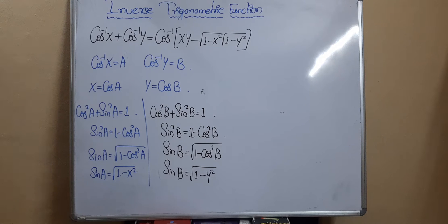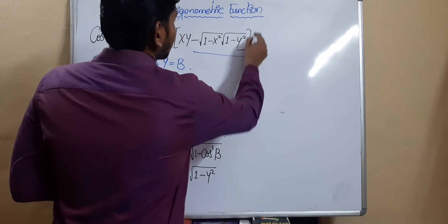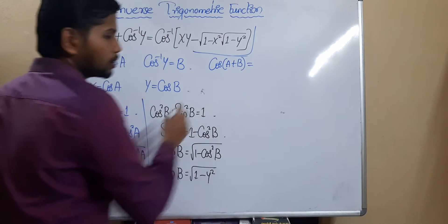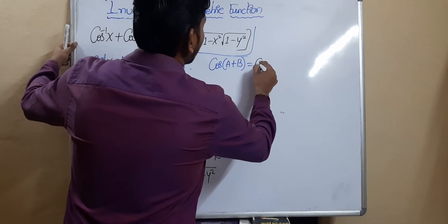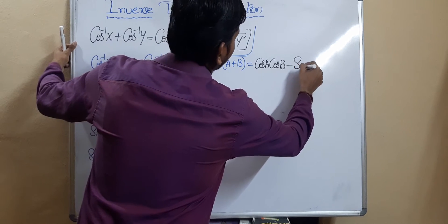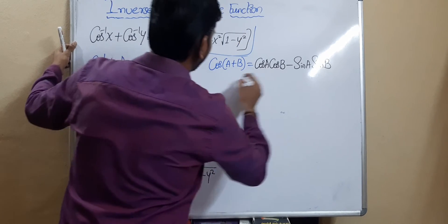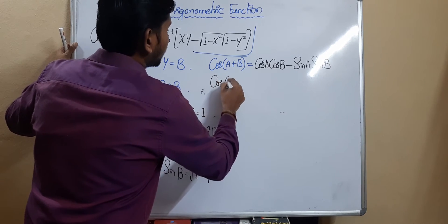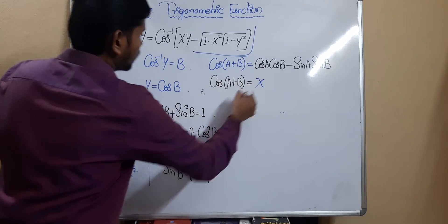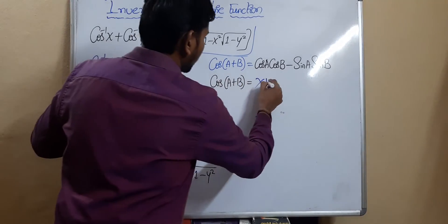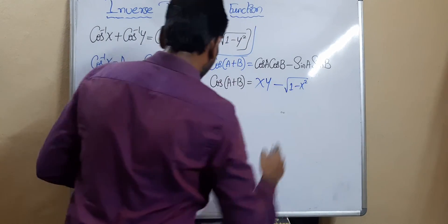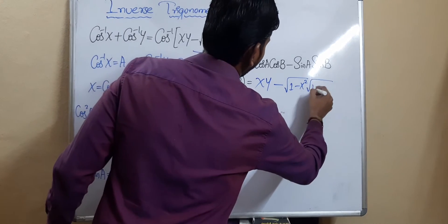We know from trigonometry that cos(a + b) = cos a·cos b − sin a·sin b. Substituting values: cos(a + b) = cos a·cos b − sin a·sin b = x·y − √(1 − x²)·√(1 − y²).